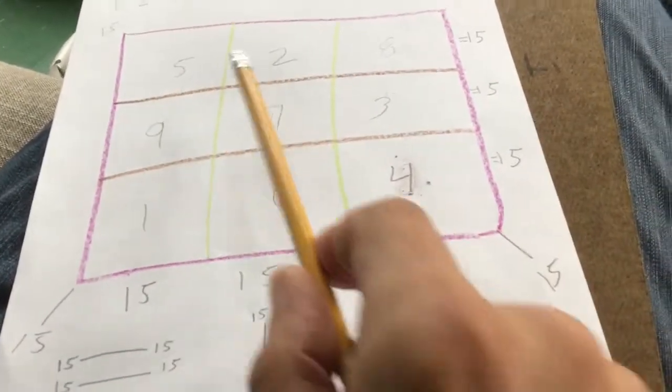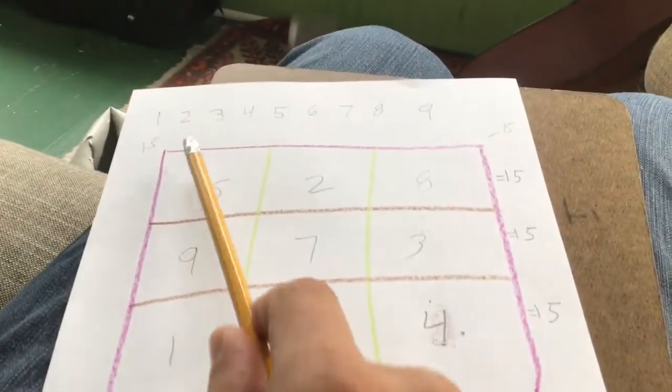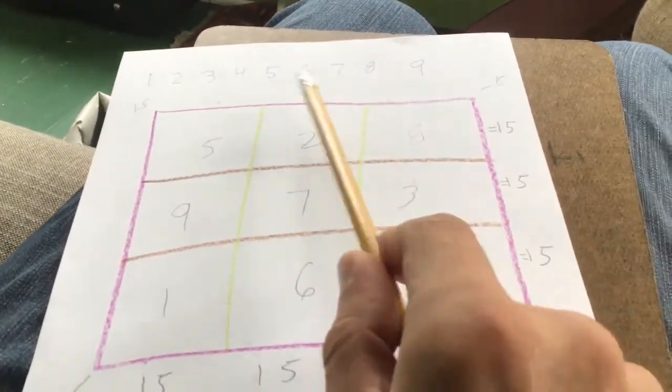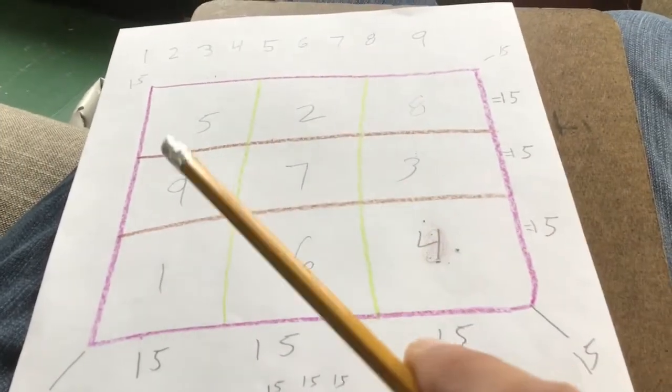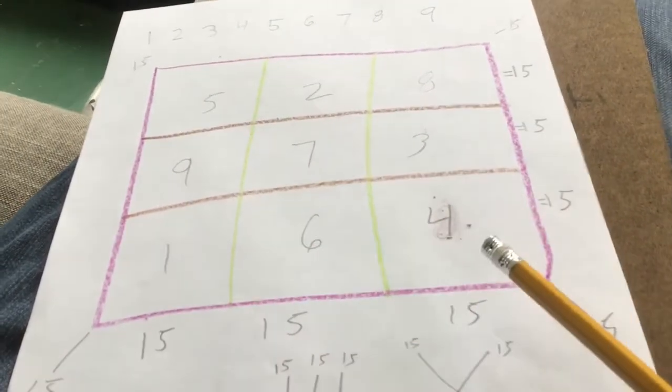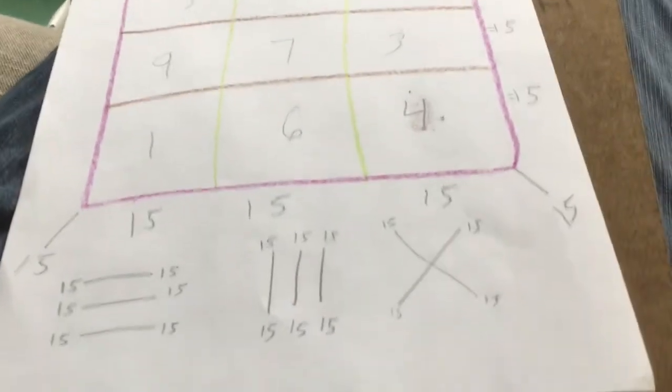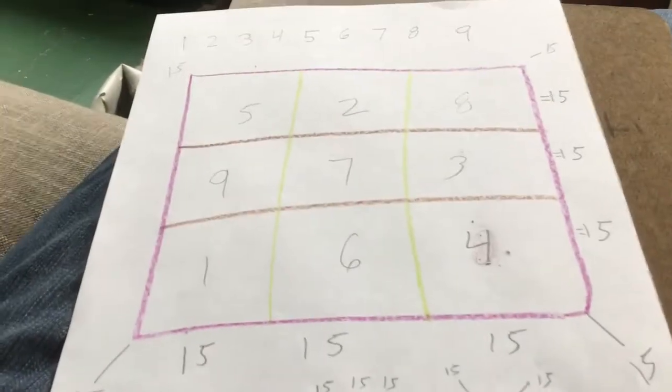So remember: make a square, 9 squares, write these numbers across. You can only use each number once. Notice I didn't use fives only here once, fours only here once, and I still didn't get it right. So that's part of the challenge.